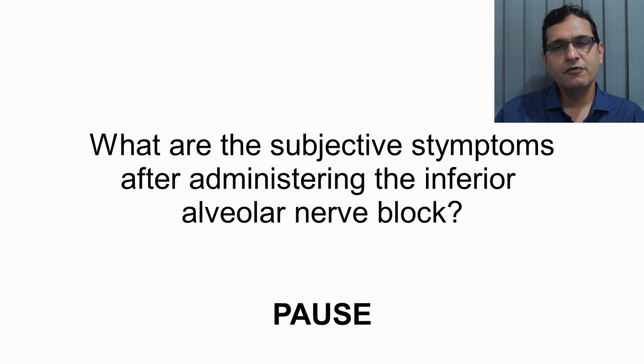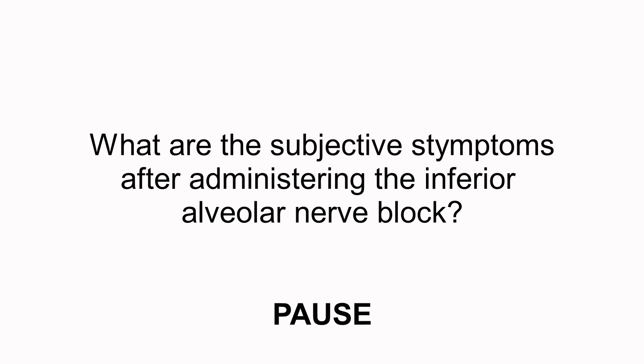What will be the subjective symptoms that a patient will give after the administration of the inferior alveolar nerve block? The patient's subjective symptoms will include a tingling sensation or heaviness in the region of the lower lip on the side of the injection, which is supplied by the mental nerve, a branch of the inferior alveolar nerve.